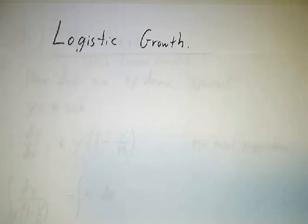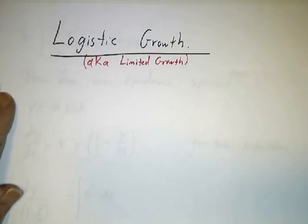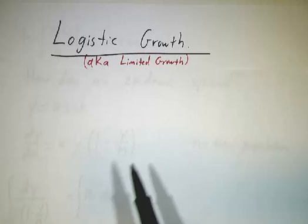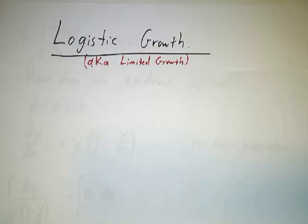Last time we talked about exponential growth and decay, and that's a good model for things that can grow without bound. But many of the things in the real world have limits to growth. So we're going to talk today about logistic growth, which is also sometimes called limited growth.